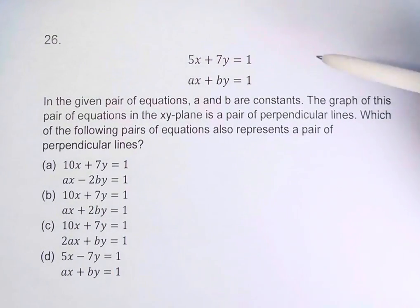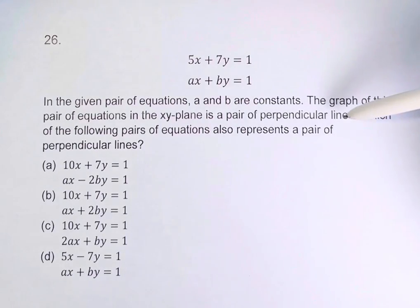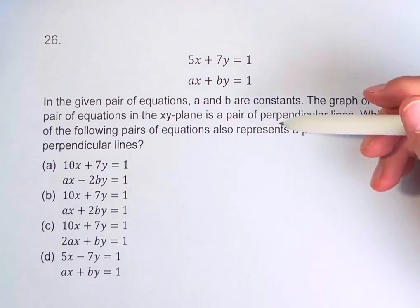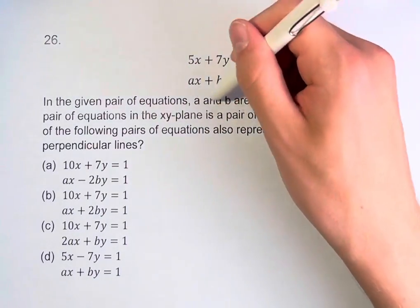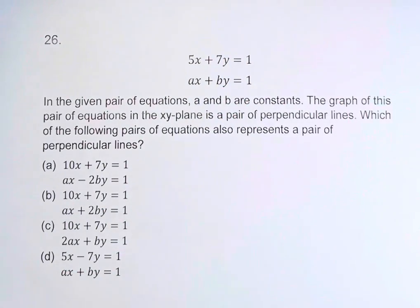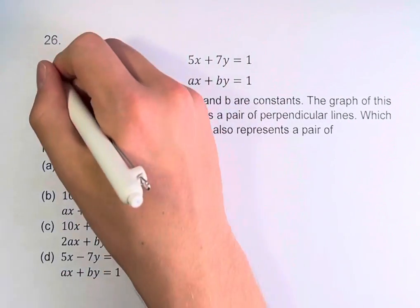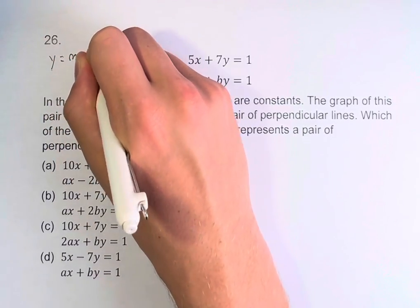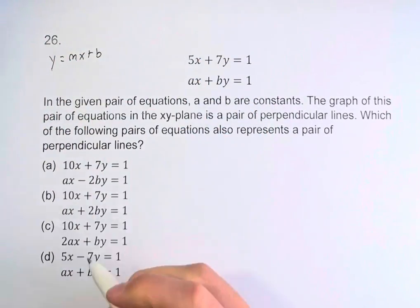For lines to be perpendicular, their slopes are opposite reciprocals of each other. Before we continue, let's find the slopes of these functions. We want to get them into slope-intercept form — y is equal to mx plus b — where m is the slope.